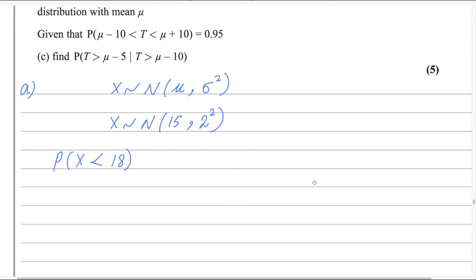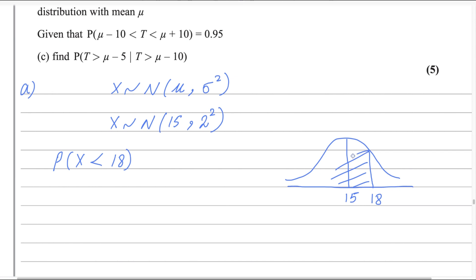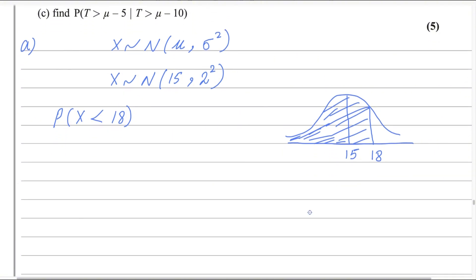To solve this, we always draw a bell curve for normal distribution questions. In the middle we write the mean, which is 15. Since 18 is greater than the mean, it will be on the right side of the bell curve. We shade the area less than 18 — this shaded area gives us the probability we need to find.